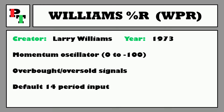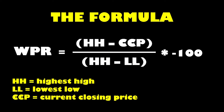The indicator defaults at a 14-period lookback, but you can make that number of periods whatever you please. The formula has three key components: the highest high over the last 14 periods, the lowest low over the last 14 periods, and the current period's closing price. Essentially, the formula figures out how close the highest high and lowest low are to the current closing price.